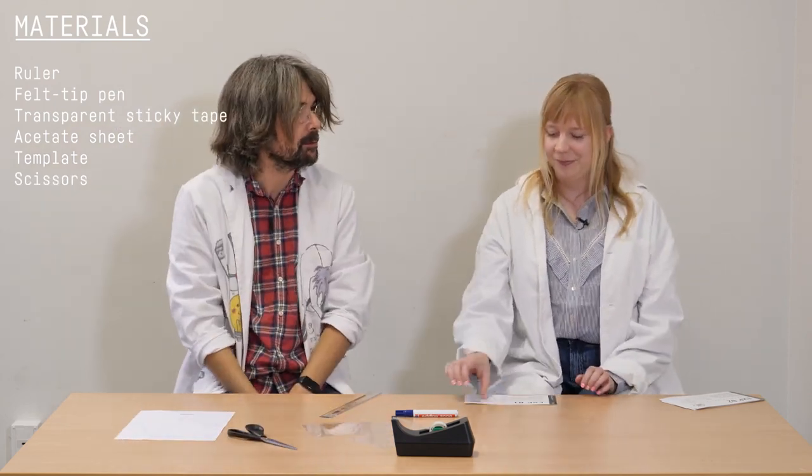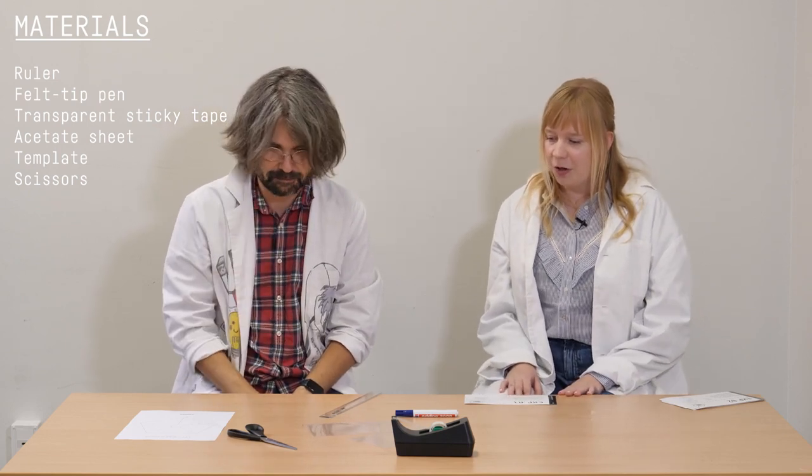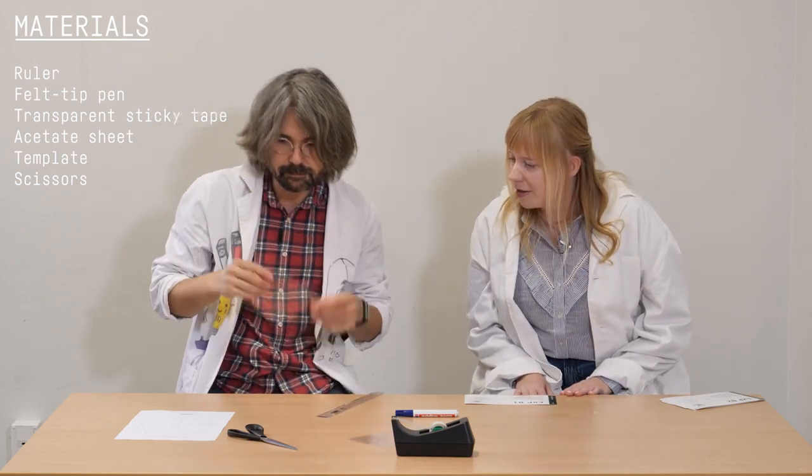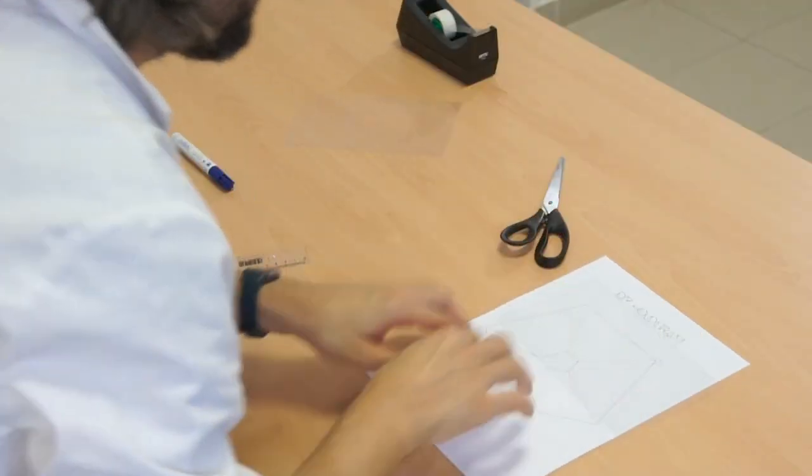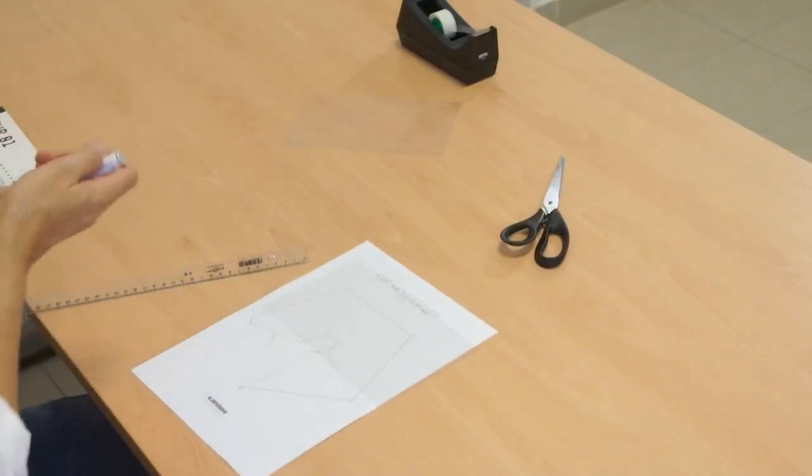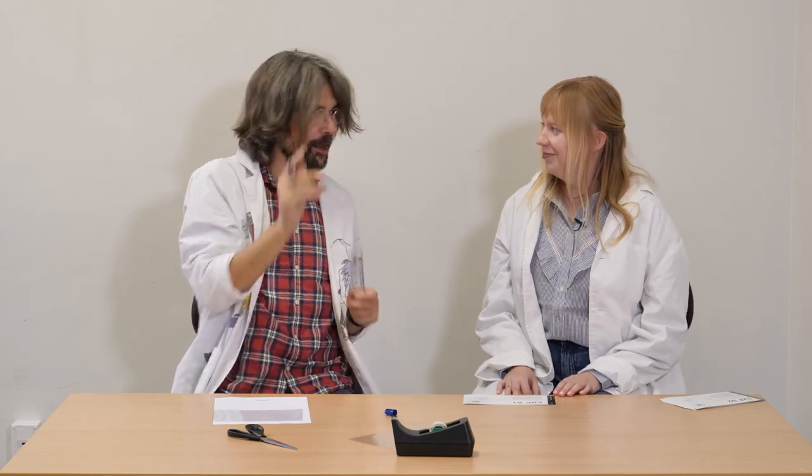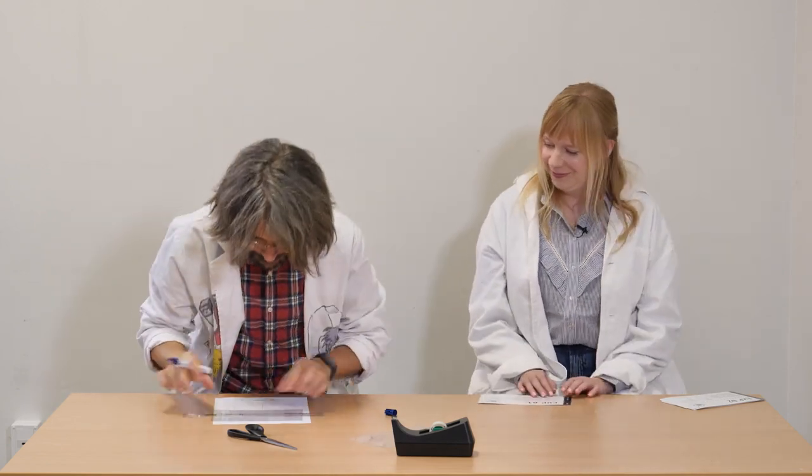What do you have to do? So first we will have to draw the lines from the template to the acetate sheet. Okay, so I'm very hand-shaky, so probably I can use the ruler for this.